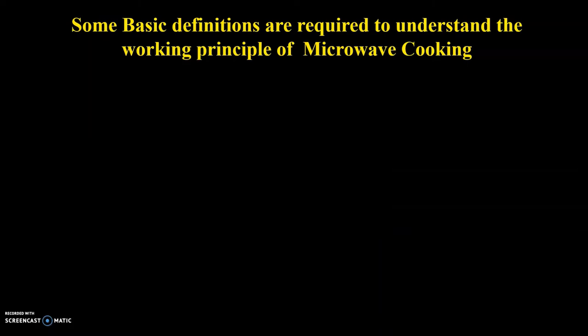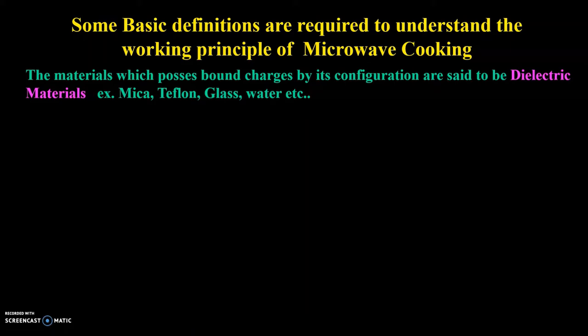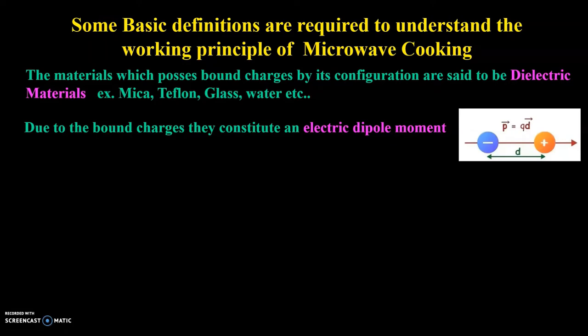Some basic definitions are required to understand the working principle of the microwave cooking process. Dielectric materials are materials which possess bound charges by their configuration. Examples include mica, Teflon, glass, ceramic, water, etc. Due to these bound charges, these materials constitute an electric dipole moment. The electric dipole moment is defined as two equal and opposite charges separated by a small distance, and mathematically it is written as the charge multiplied with the displacement from the origin.